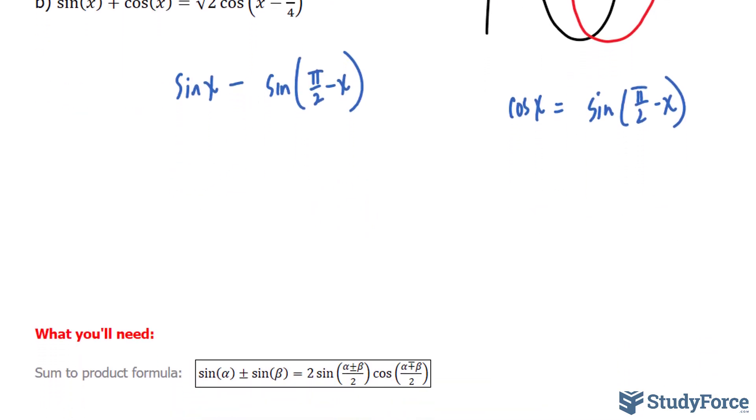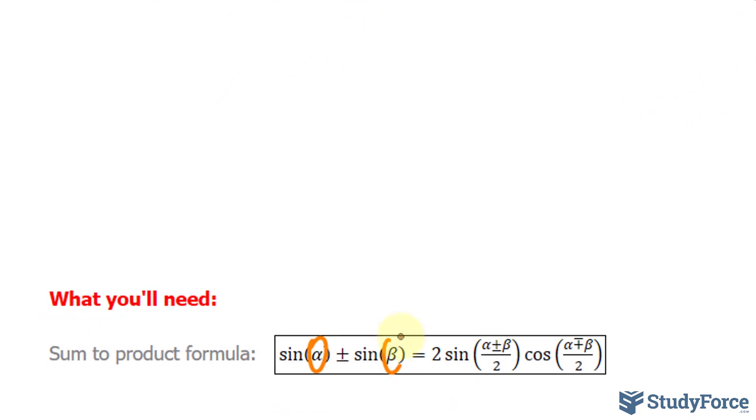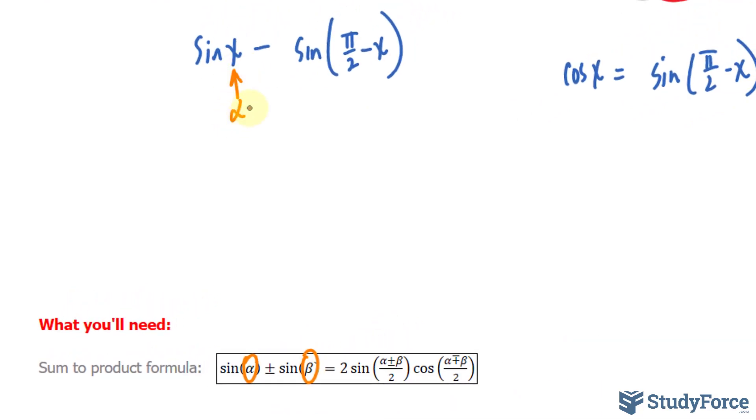And from here, we'll be using the sum to product formula. So, to convert these two terms into a single big term consisting of these three factors. According to the identity, we have alpha and beta. We'll call this alpha, and we'll call that beta.